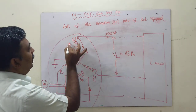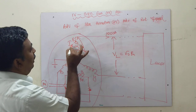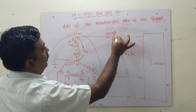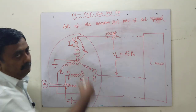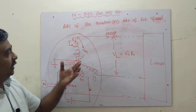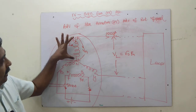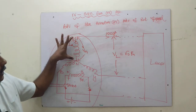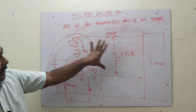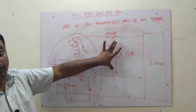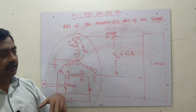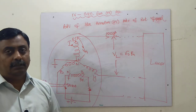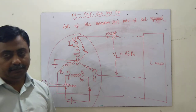In a star-connected alternator, the armature current and load current are the same. The key advantage is that although we only generate phase voltage (V_phase) in each winding, at the output terminals we get √3 times V_phase as the line voltage. This is why we go for a star-connected alternator.